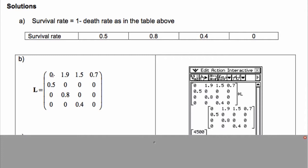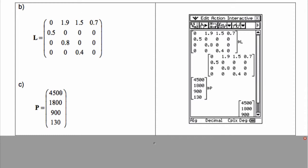Here is our Leslie matrix: along the top are the reproduction rates — 0, 1.9, 1.5, and 0.7 — and the survival rates are 0.5, 0.8, and 0.4 along the diagonal; 0 everywhere else. We can enter that into our calculator and do the calculations from there. The matrix P represents the subgroups within the population — the total numbers of bats in each subgroup: 0–6 months, 6–12, 12–18, and 18–24 months.